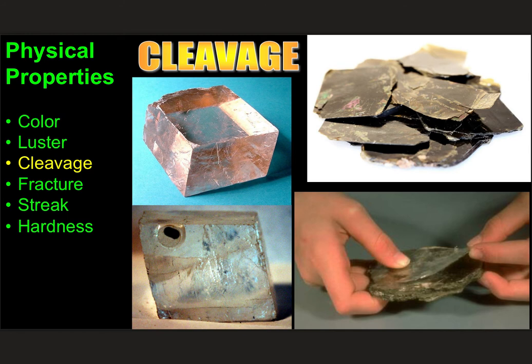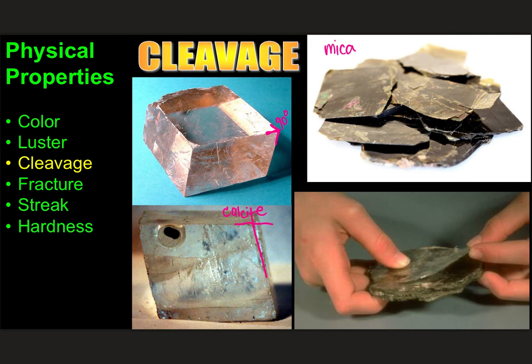Here's an example: mica with that one direction of perfect cleavage — it actually breaks in sheets. And this is a beautiful piece of calcite — you can see that 60/120-degree cleavage. This one here I believe is supposed to show a 90-degree angle — I think that's a big chunk of table salt. Once you actually see this in person it'll make sense.